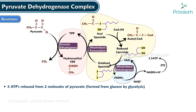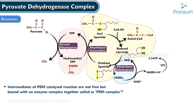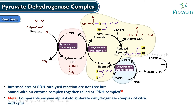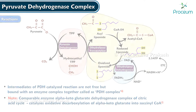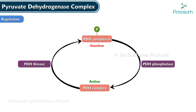As a whole, 5 ATP are released from the PDH complex from 2 moles of pyruvate, which is formed from glucose by glycolysis. All intermediates of the PDH-catalyzed reaction are not free but are bound within the enzyme complex. A comparable enzyme to PDH is the alpha-ketoglutarate dehydrogenase complex of the citric acid cycle, which catalyzes the oxidative decarboxylation of alpha-ketoglutarate into succinyl coenzyme A.